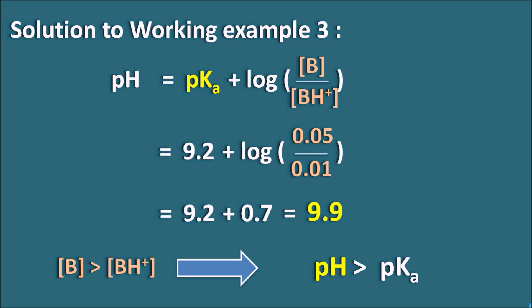In this way we can use the Henderson-Hasselbalch equation to relate pH and pKa. We can use it to determine the pH of a solution with specific concentrations of the salt and acid forms for weak acids and weak bases, and also to determine what pH must be maintained to achieve a specific ratio of salt to acid form. That concludes this discussion of the Henderson-Hasselbalch equation.